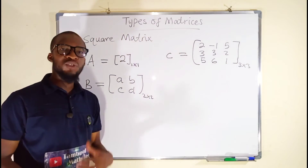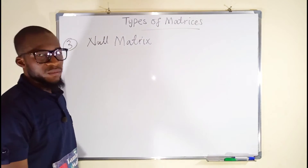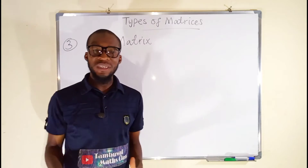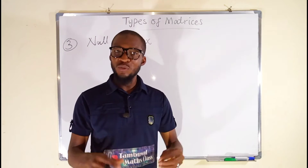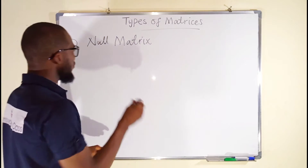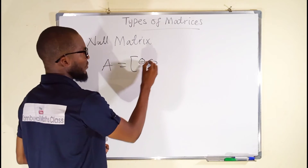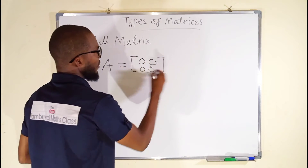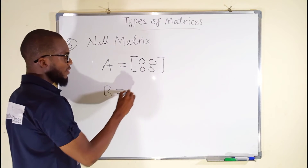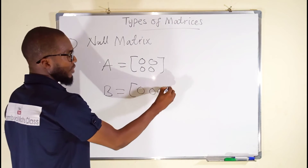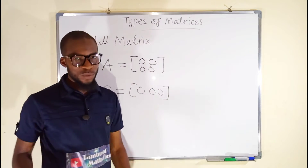Let us move on to the next type: null matrix. A matrix is said to be null if and only if all the elements in that matrix are equal to zero. So if you have a matrix like [0, 0; 0, 0], this matrix is said to be null. If you have another one like [0, 0, 0], this is also a null matrix — when all the entries are equal to zero.